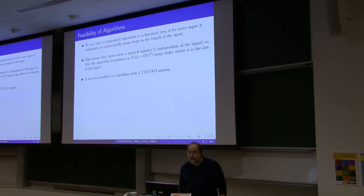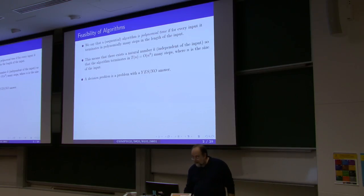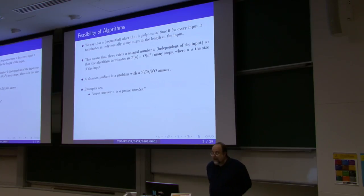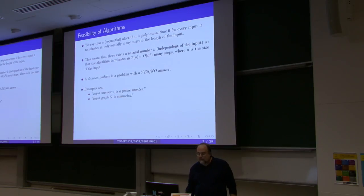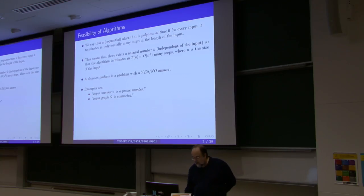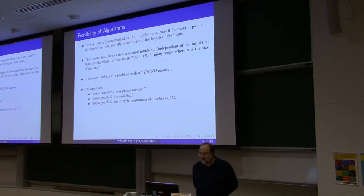A decision problem is just a problem with a yes-or-no answer. Examples include: is input number n a prime number? Is the input graph connected? Or does input graph G have a cycle containing all vertices of G — which we call a Hamiltonian cycle?